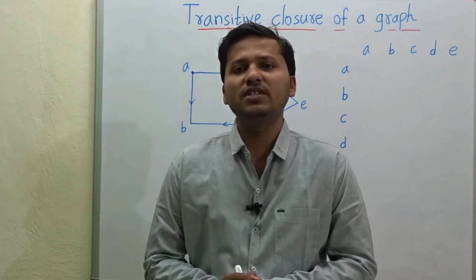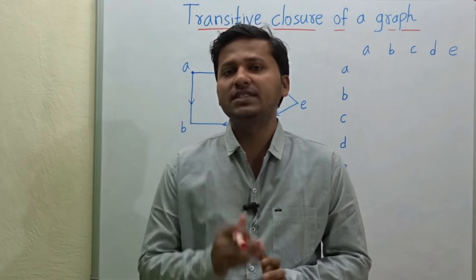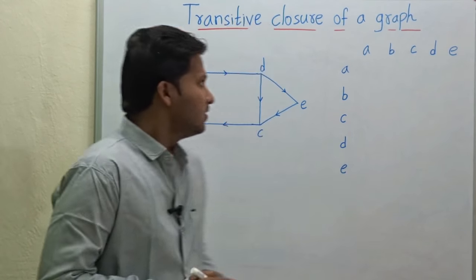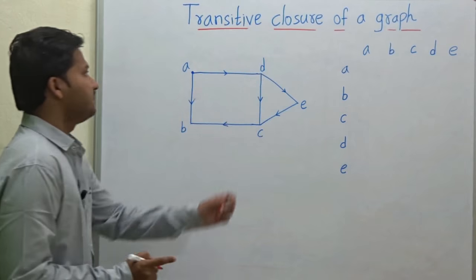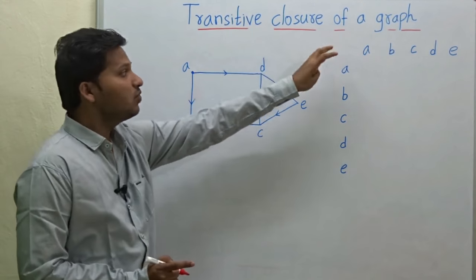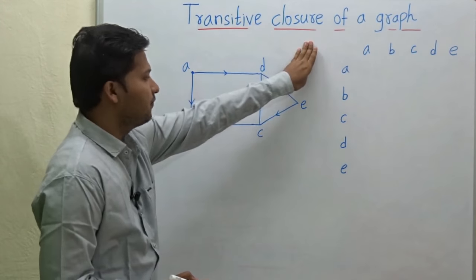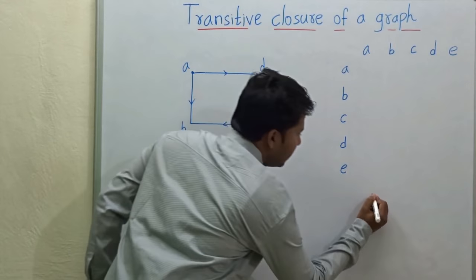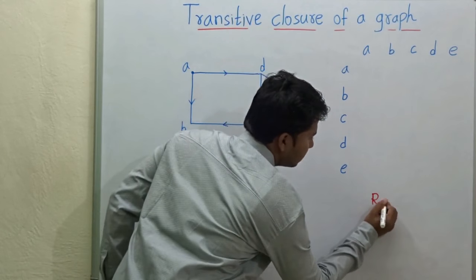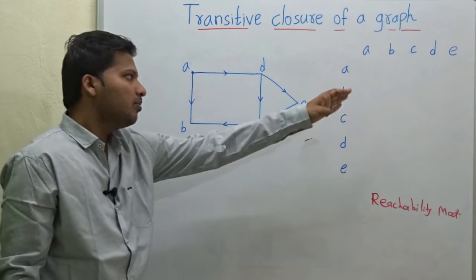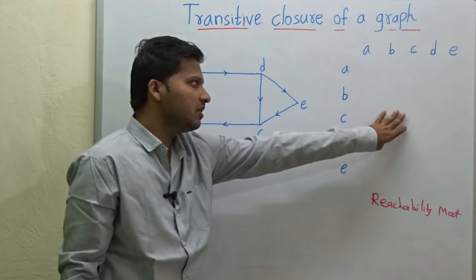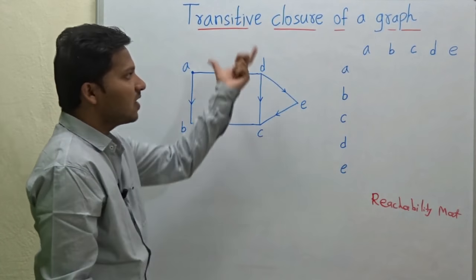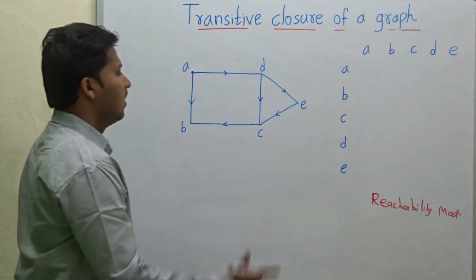Hello friends, today we are going to see what is the transitive closure of a graph. For representing the transitive closure of a graph, we make use of the reachability matrix. So let's complete the reachability matrix here to understand the transitive closure of the graph.